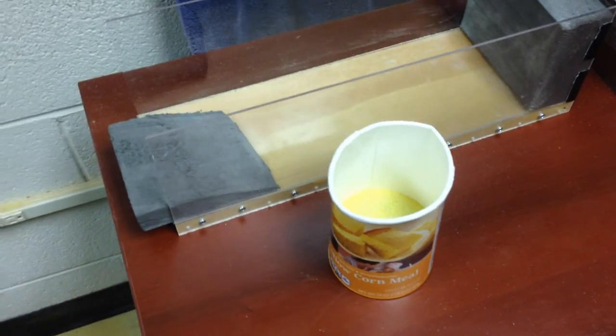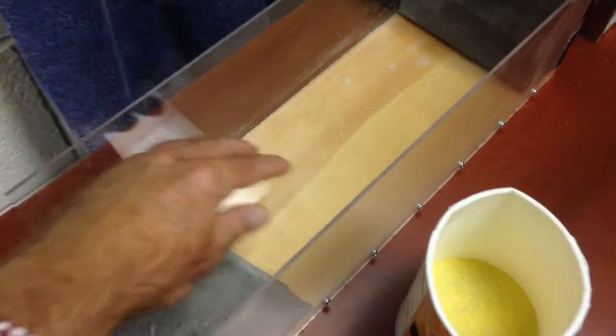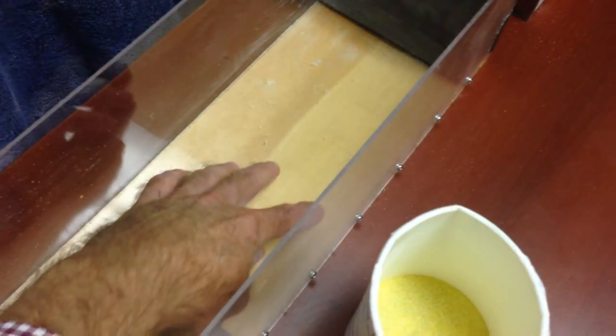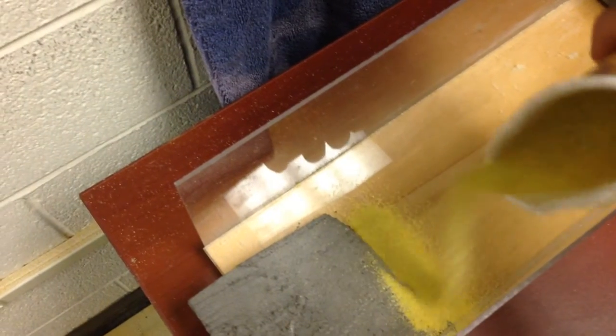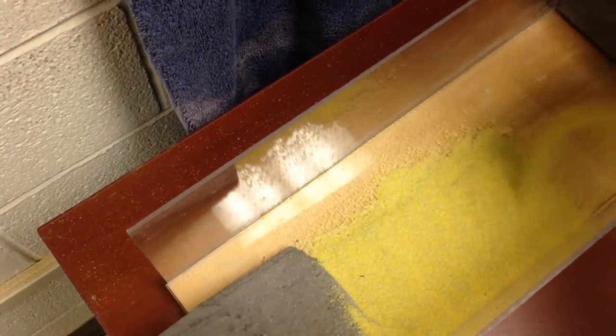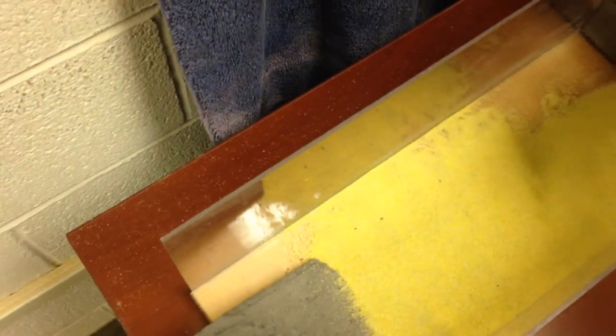But certainly you don't have to have this particular cornmeal to make a decent model. What you do need to do to make a good model is to be sure that you have a very smooth base or floor to your rig and that you select a granular material that is going to slide very easily across that floor. And hopefully right now I'll be able to demonstrate to you what this would look like.